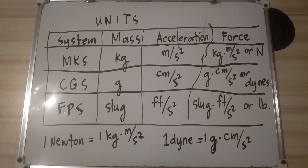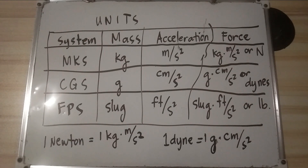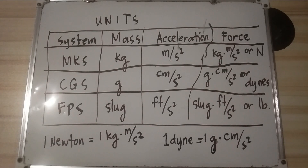For units, we have three systems: MKS, CGS, and FPS. MKS is meter-kilogram-second; CGS is centimeter-gram-second; FPS is foot-pound-second. In MKS, mass is in kilograms, acceleration in meters per second squared, and force in kilogram-meter per second squared, or newtons. In FPS, mass is in slugs, acceleration in foot per second squared, and force in slugs-foot per second squared, or pounds. Take note: 1 newton equals 1 kilogram-meter per second squared, and 1 dyne equals 1 gram-centimeter per second squared.